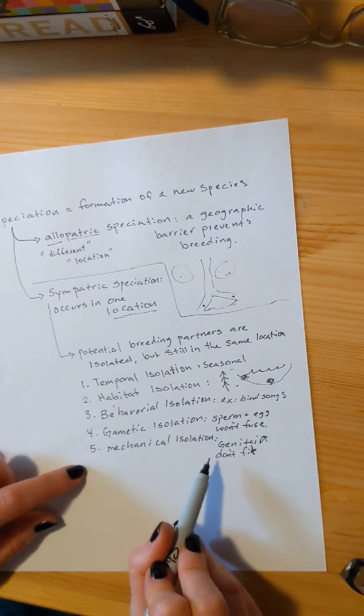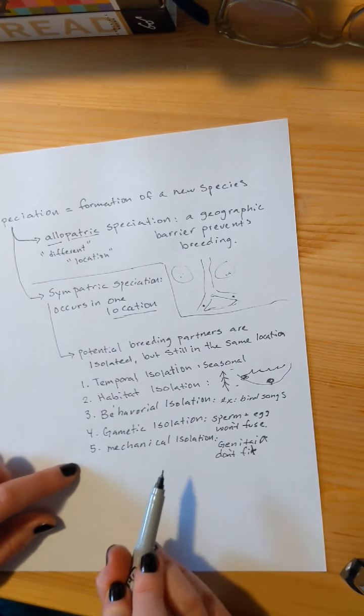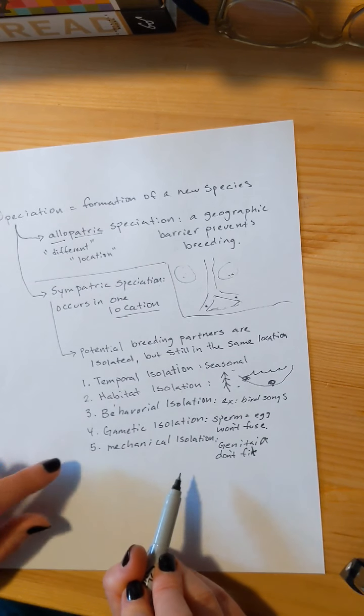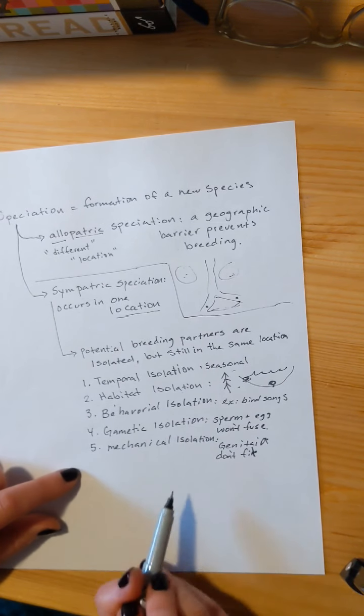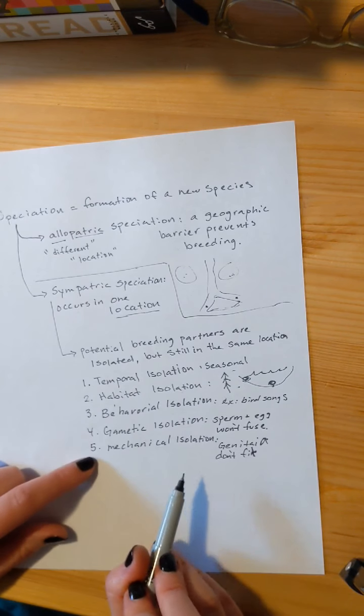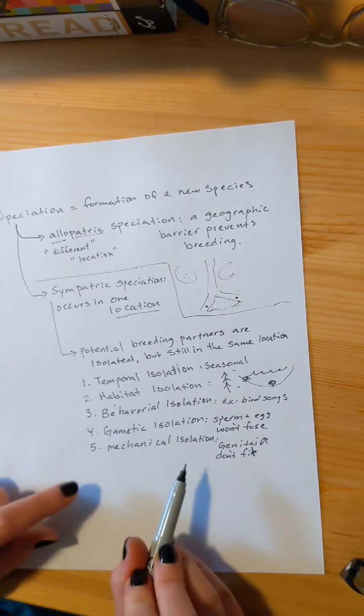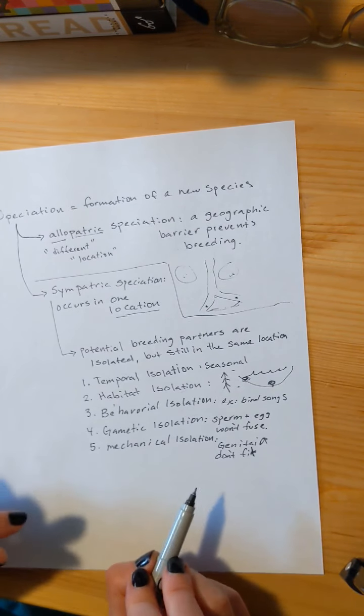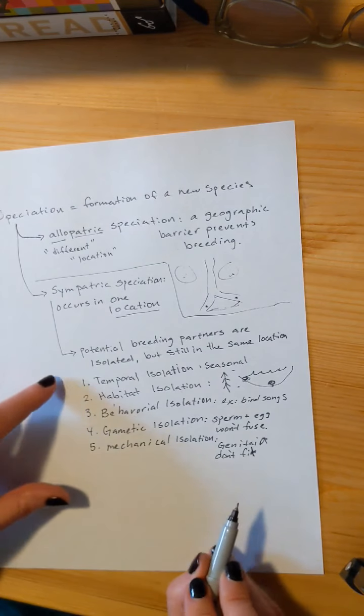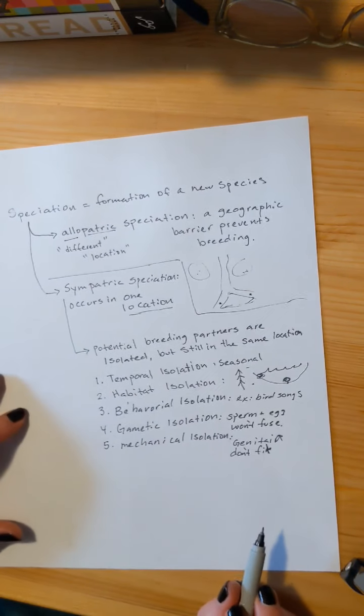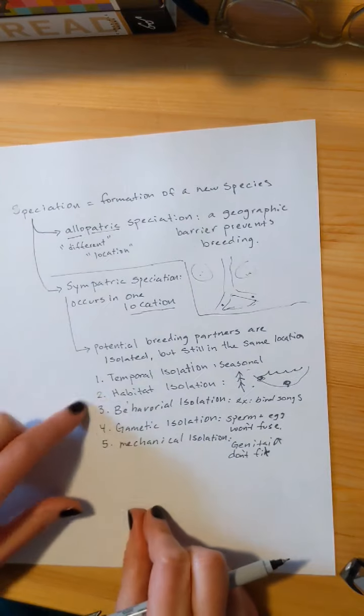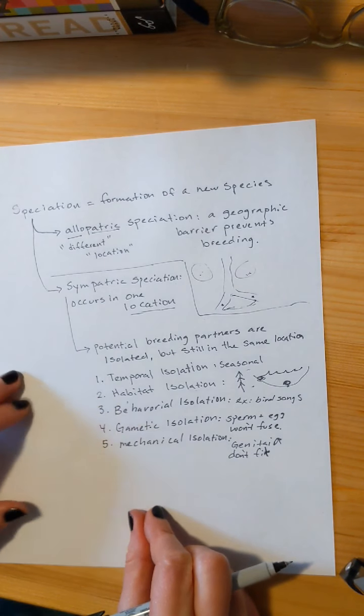We always say that as an example, but there is a Great Dane and Chihuahua mix. It was a male Chihuahua and a female Great Dane, and they did produce an offspring. So not the best example of mechanical isolation, but visually, it works.